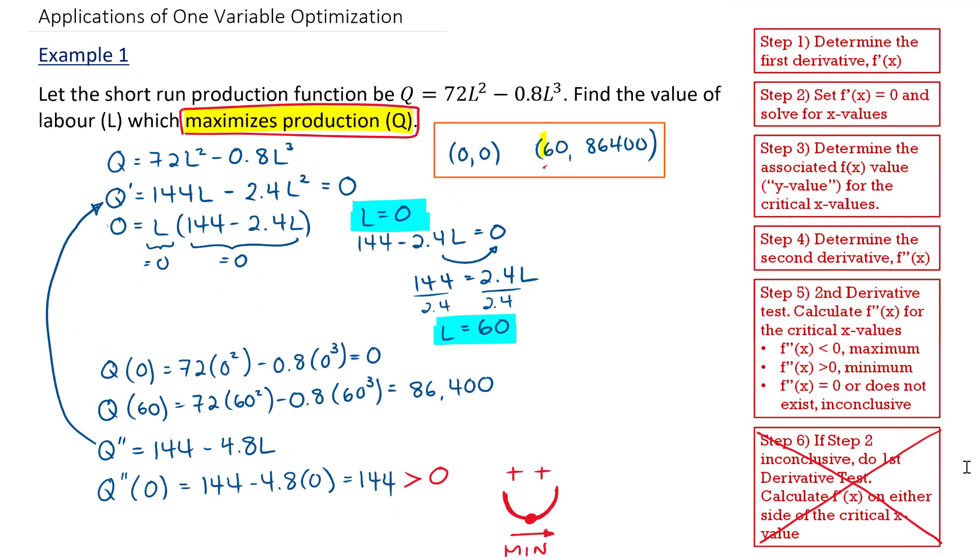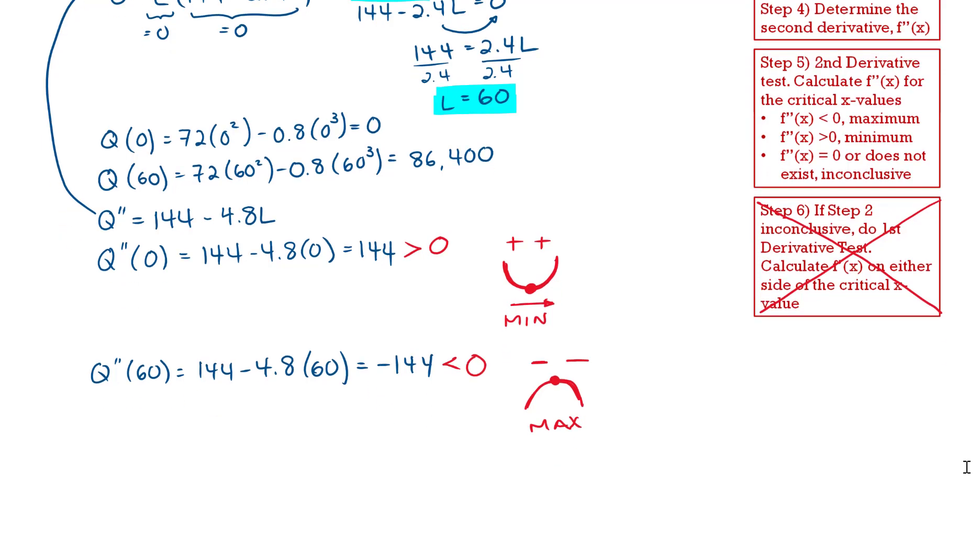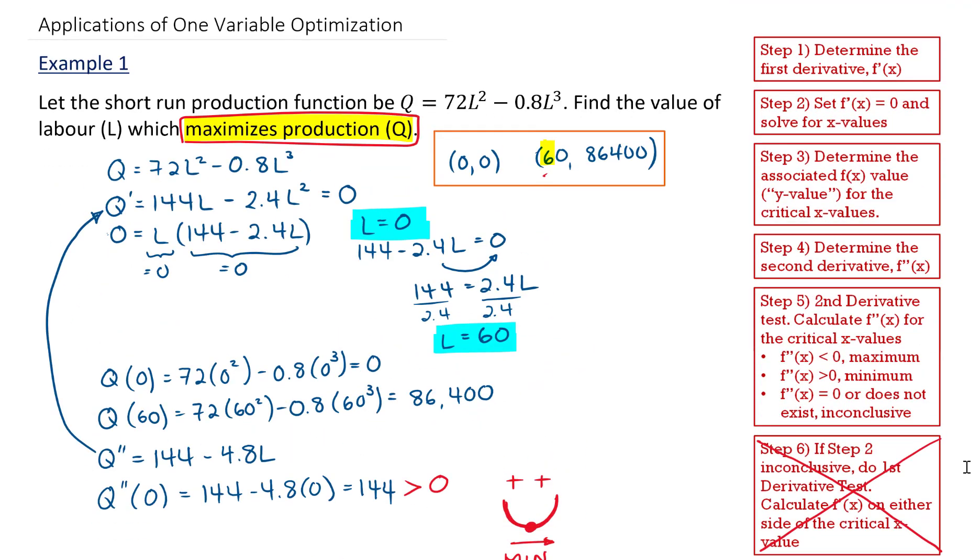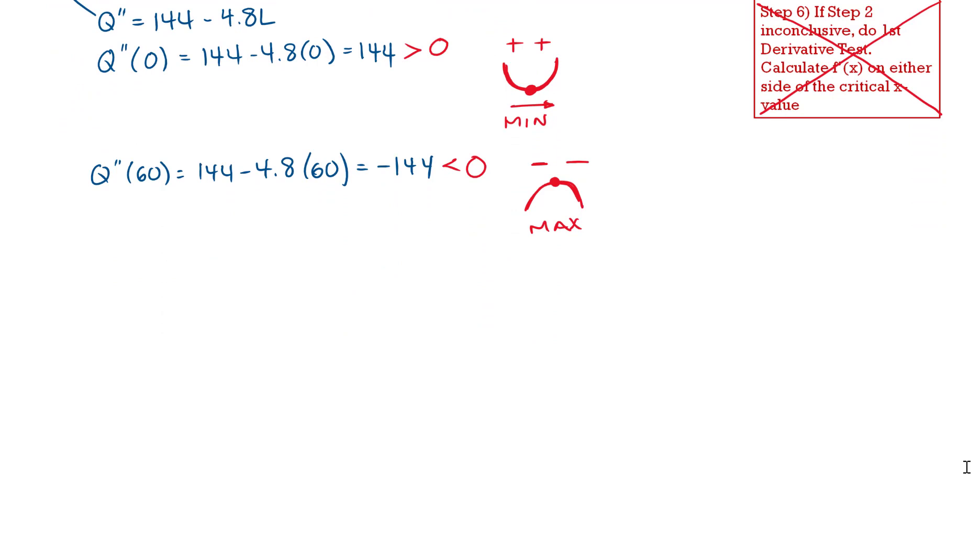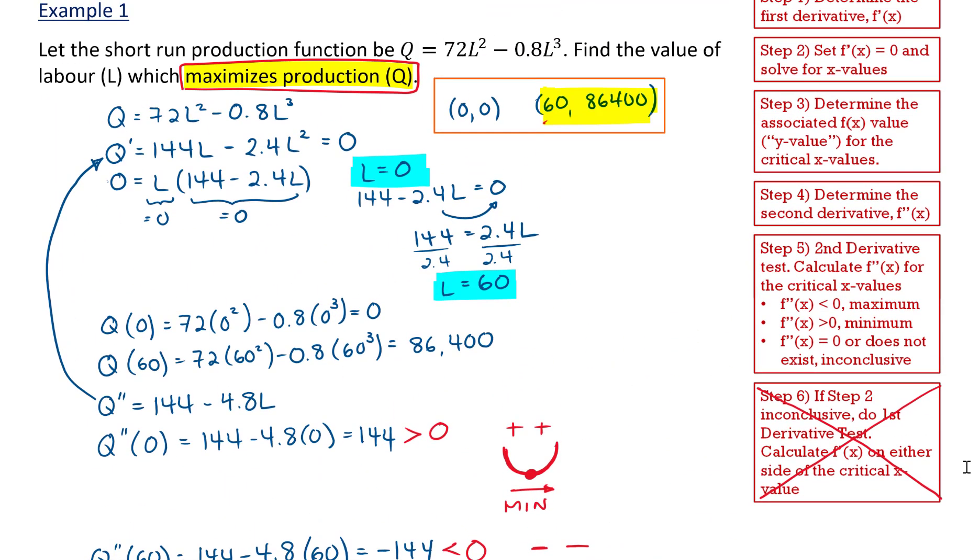And that happens when L is equal to 60, as we can see down here. And the associated level of production is 86,400. So as our concluding statement, we can say production is maximized when labor L is equal to 60. The associated maximum production level is 86,400.